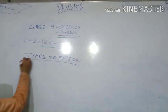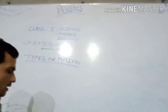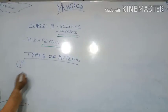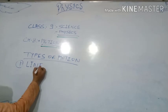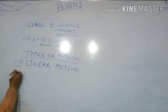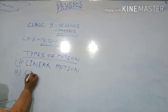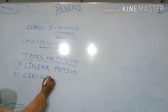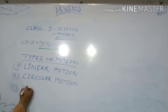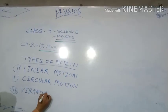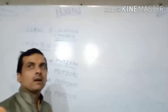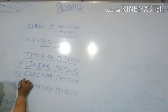Types of motion can be divided into three groups. First, linear motion. Second, circular motion. Third, vibratory motion. So here we have linear motion, circular motion, and vibratory motion.